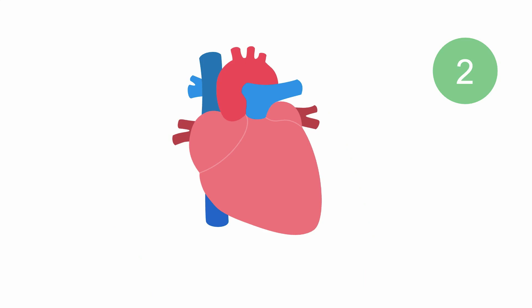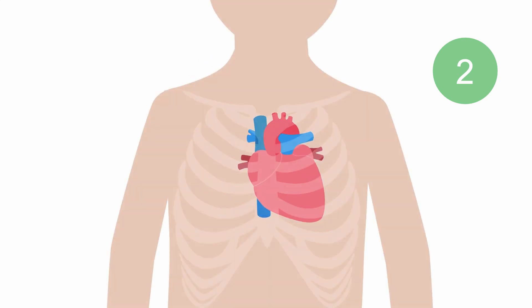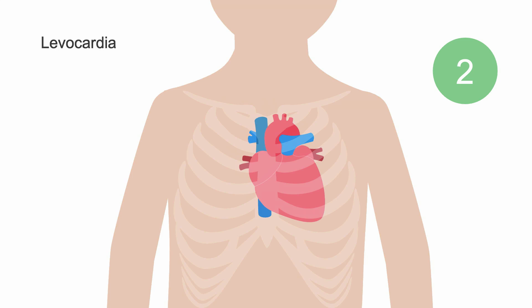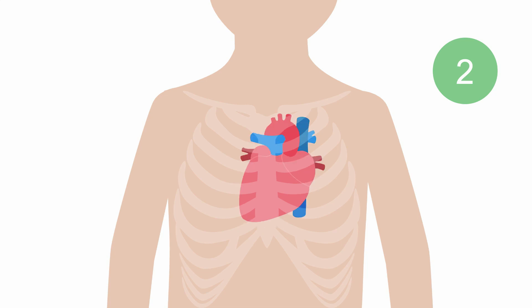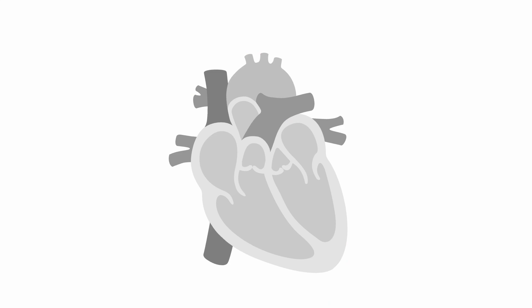The second aspect to cardiac position is the orientation of the apex — in other words, the tip of the heart. The cardiac apex normally points to the left, termed levocardia. If it points to the midline, it's termed mesocardia. And if it points to the right, it's called dextrocardia.